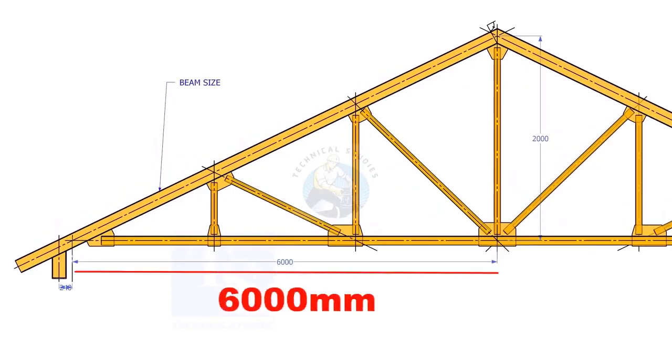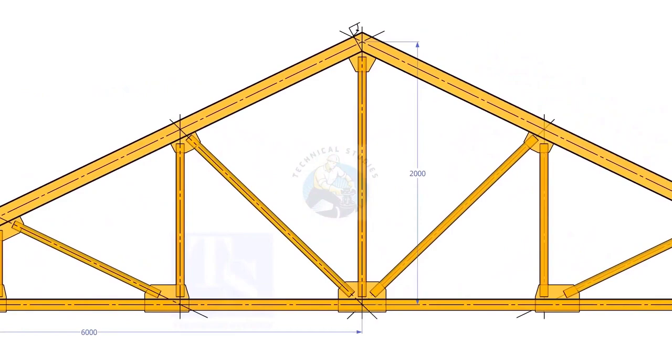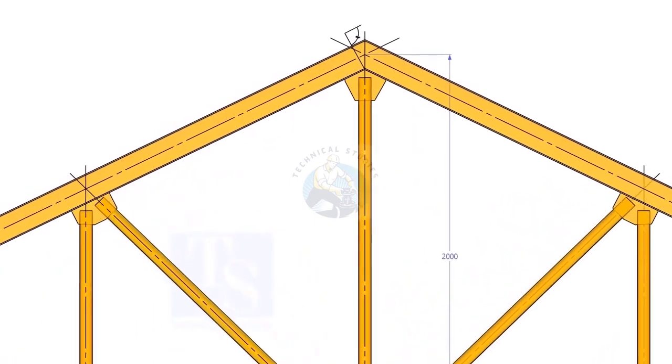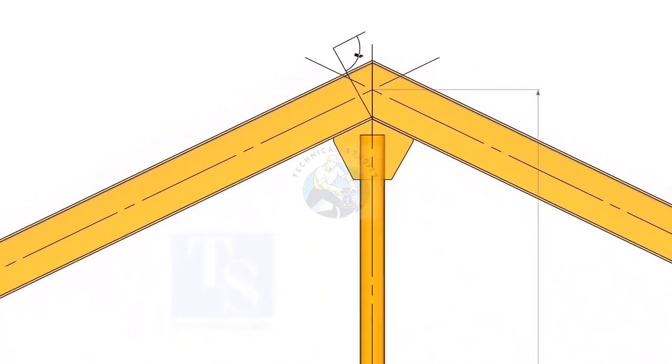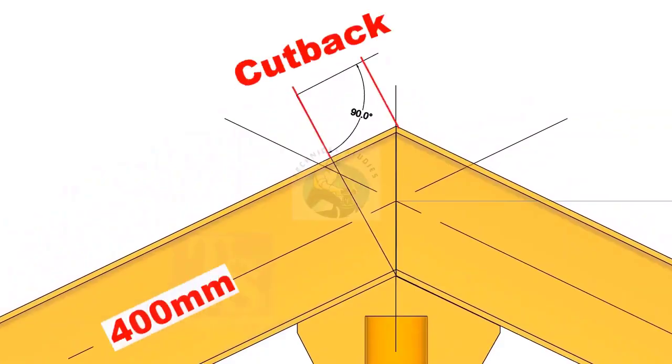Assume that the half span of a truss is 6000mm and the height of the truss is 2000mm. How to calculate the cutback of a 400mm wide girder?